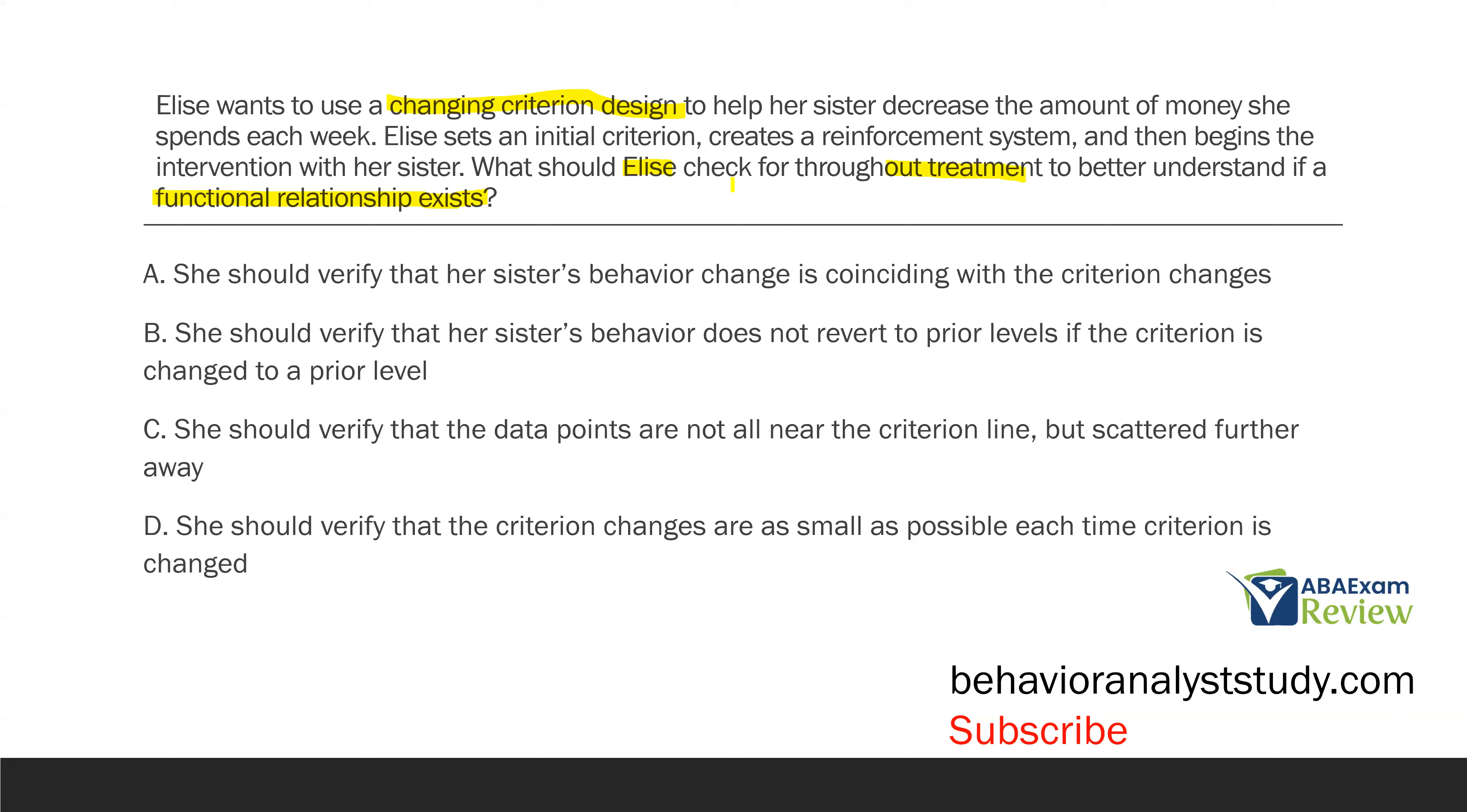Ideally, you always want a functional relationship because it means you are controlling the behavior. For each experimental design, there's different ways to check for functional relationships. In this particular scenario, we're looking at a changing criterion design. In the changing criterion design, we set a criterion, and then, depending on which way you want the behavior to move, we either increase or decrease it. In Elise's case, since she wants to decrease it, then let's say she sets the criterion at $100 a week. She'll move it down to, let's say, $90, then $80, so on and so forth. So, if this is Elise's strategy, how is she going to understand if a functional relationship exists? Answer A: she should verify that her sister's behavior change is coinciding with the criterion changes. Is it true that you want the behavior to follow the criterion changes? Absolutely. That's the entire idea. The behavior should move as the criterion moves. So, A is absolutely true.